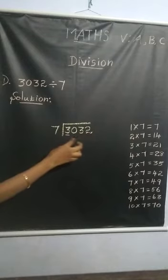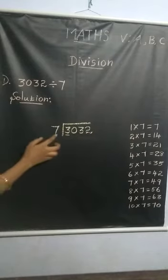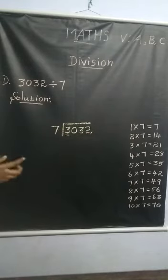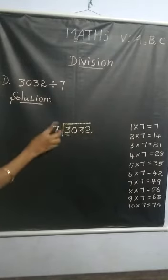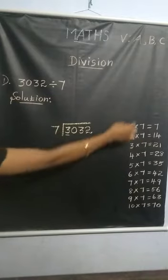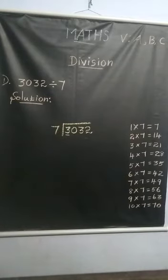3032 is the dividend. 7 is the divisor. So we use the 7th table.